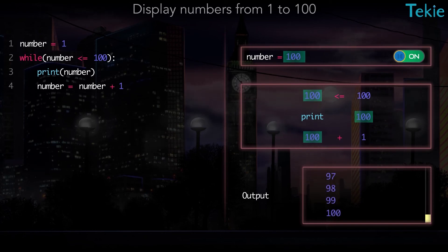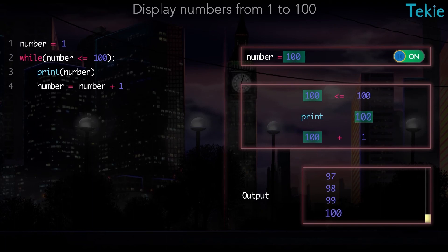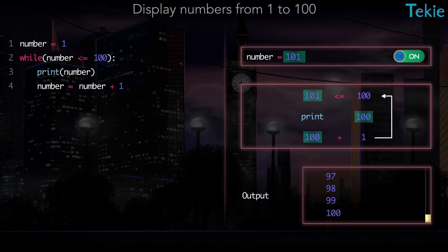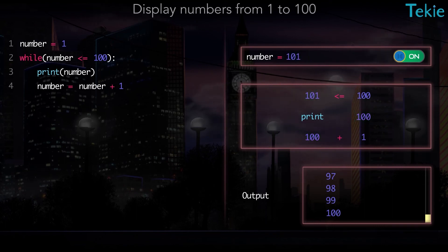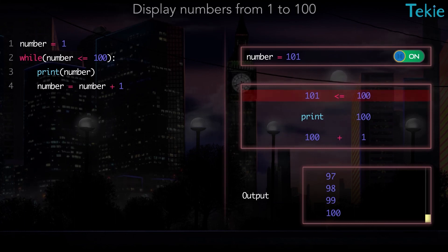When we reach 100, we display 100 as output and add 1 to 100, so the variable now holds 101. Now we check if number 101 is less than or equal to 100. And because it's greater than 100, the loop stops.